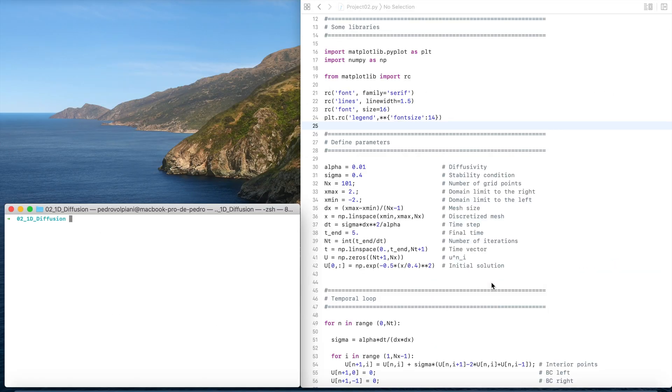Let's have a look at the code now. In this part, we import some libraries. You don't really need this parameters definition here, but I think the graphics look much better. Then we define the parameters.